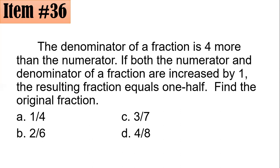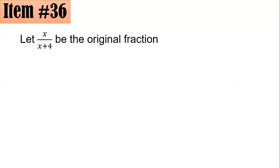Item 36: the denominator of a fraction is 4 more than the numerator. If both numerator and denominator are increased by 1, the resulting fraction equals one half. Find the original fraction — is it 1/4, 2/6, 3/7, or 4/8? If the numerator is x, then the denominator is x plus 4.